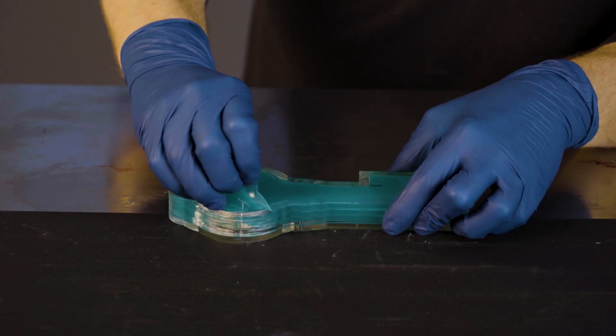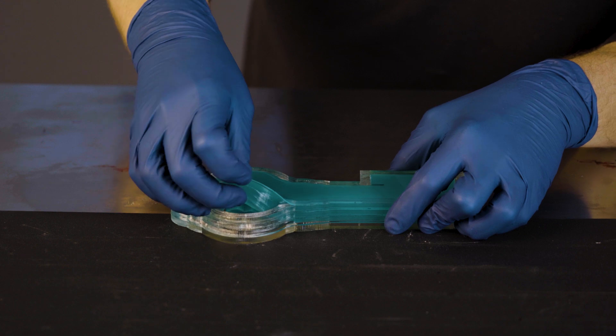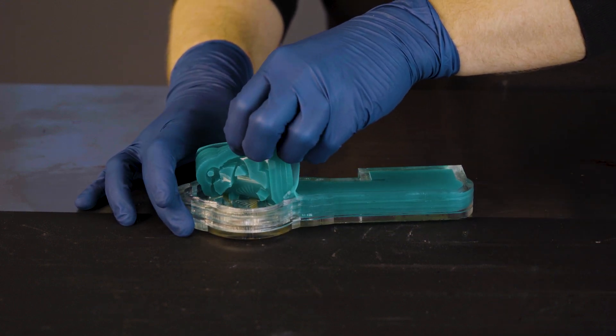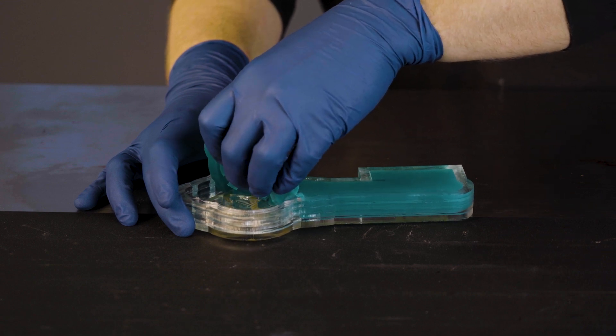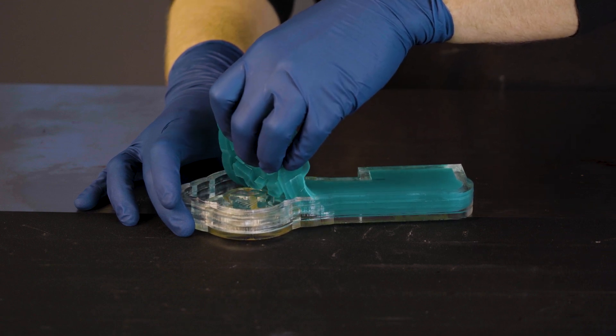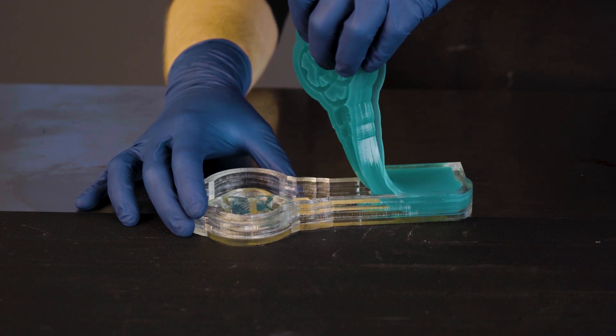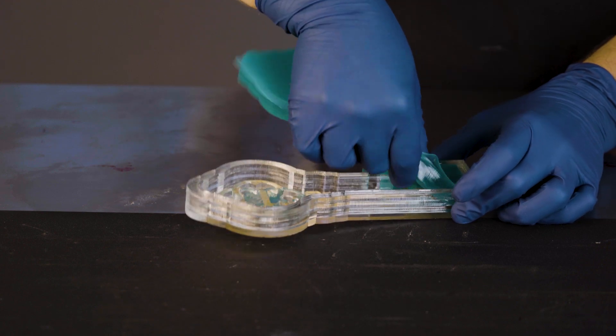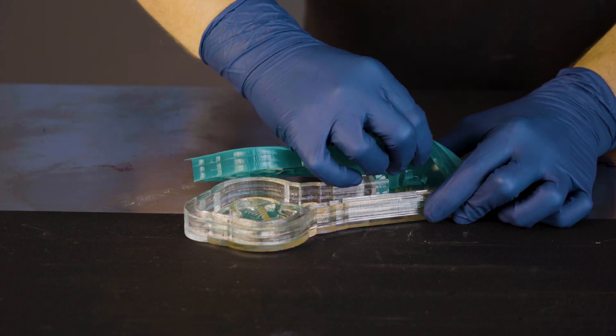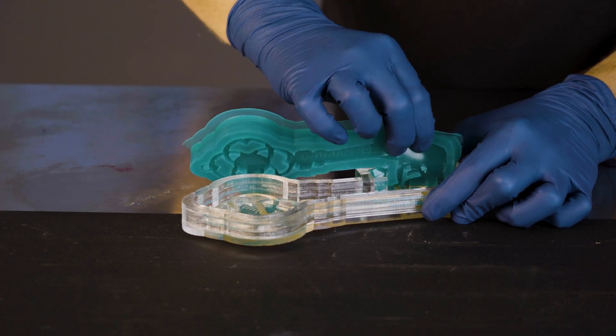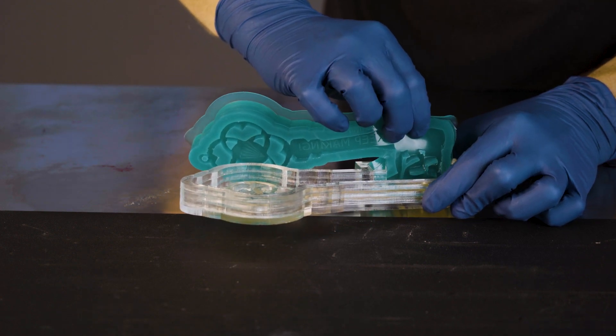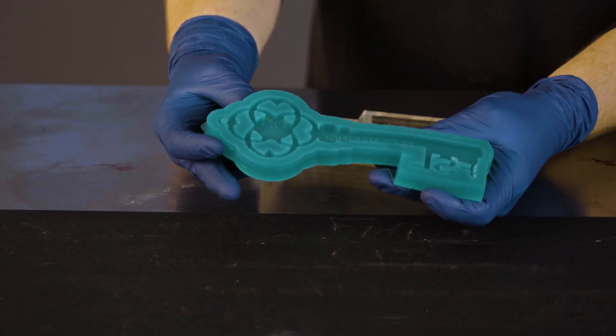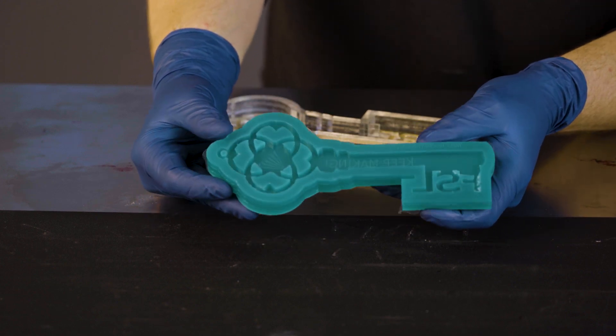We didn't use any release agent, but it's still going to come out fairly easy on this acrylic. I'm going to slowly and carefully pull this from the mold. Just want to be nice and slow along all those details. There we go. Our silicone mold.